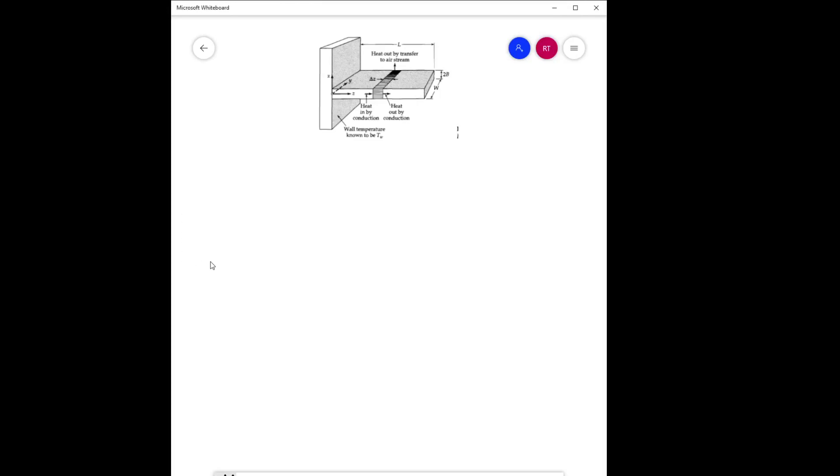Now we'll be doing the cooling fin problem. Let's say we have a cooling fin over here with a width of W and 2P is the height. Let's take delta Z as a small section on the fin.